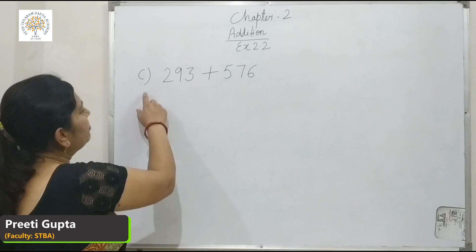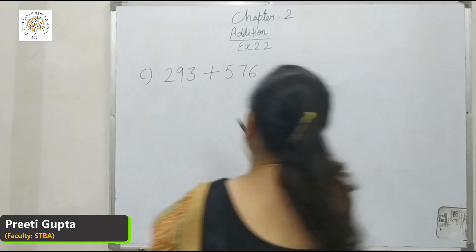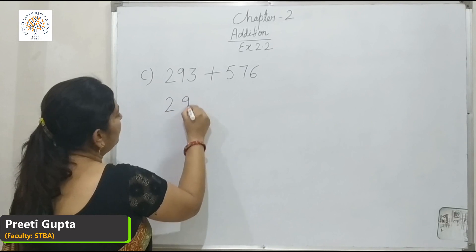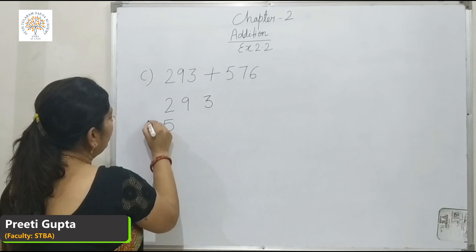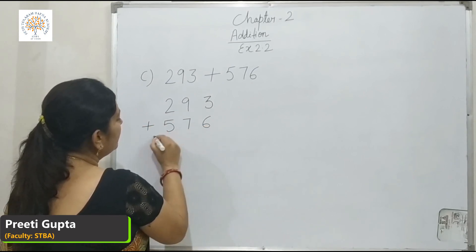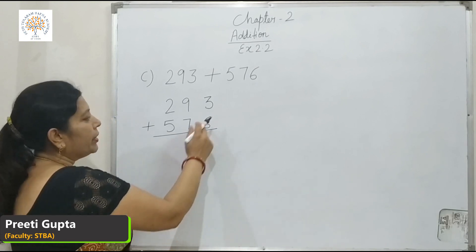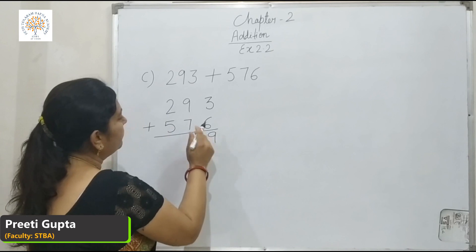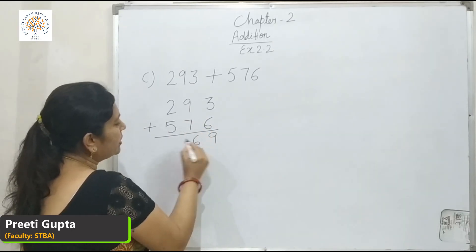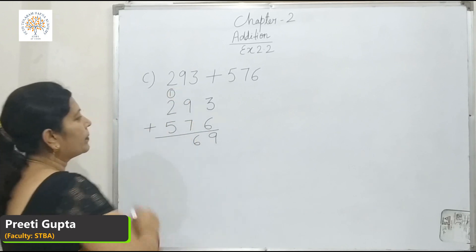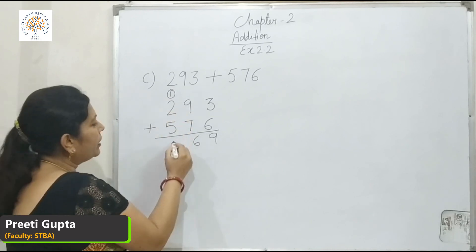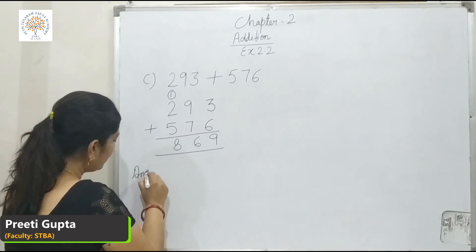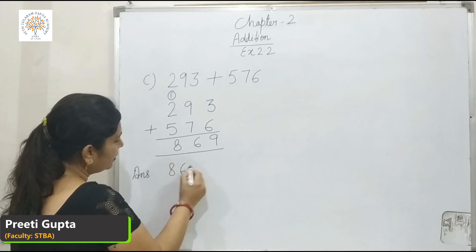Now we will proceed part C: 293 plus 576. In 2 or 3-digit numbers, we work from right to left. 6 and 3 is 9. 9 plus 7 is 16 — we write 6 here and carry 1 here. 2 and 1 is 3, and 3 and 5 is 8. Answer is 869.